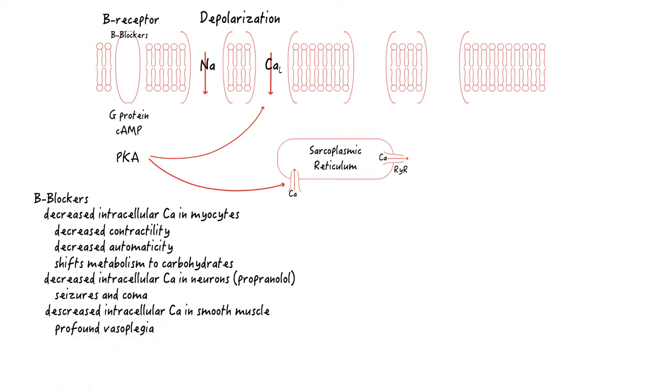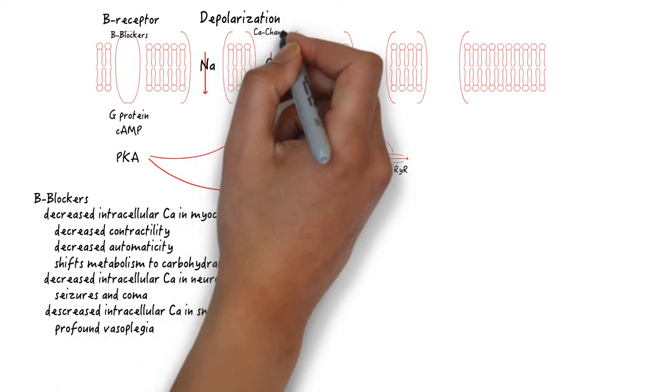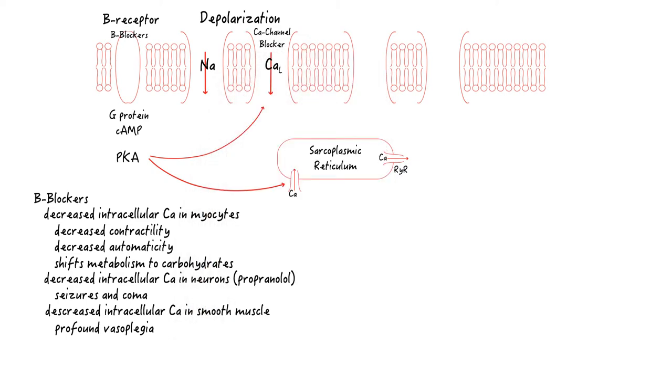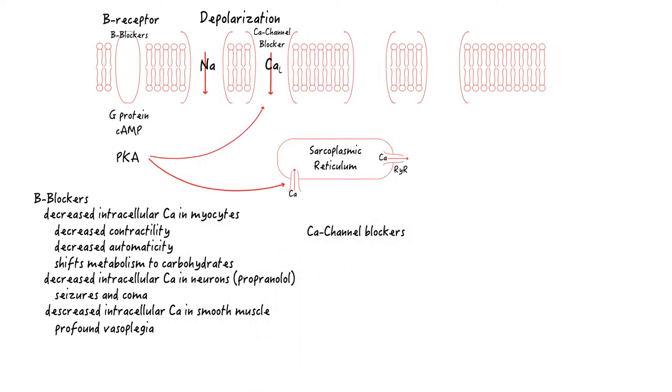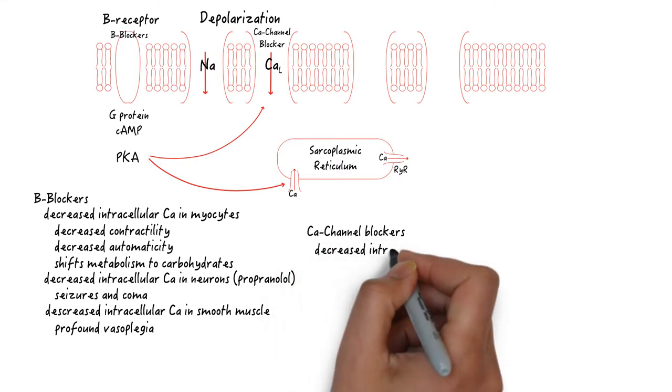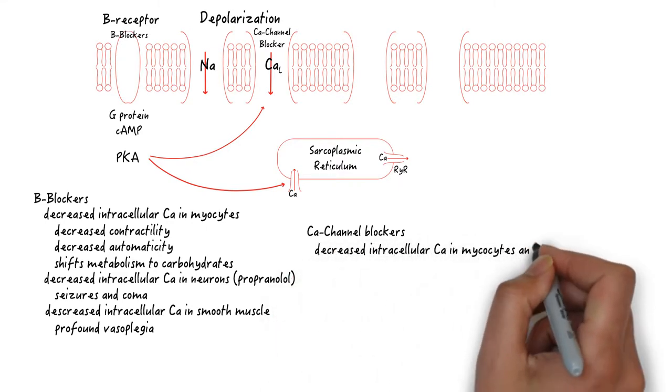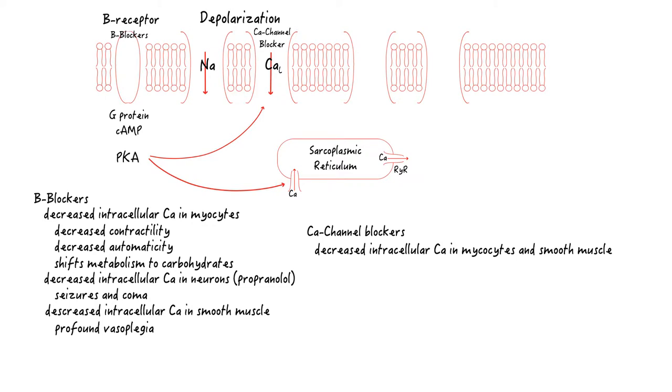Unlike beta blockers, which indirectly inhibits the L-type calcium channels, calcium channel blockers block them directly. This results in a clinical picture very similar to beta blockers. Vasoplegia, decreased contractility, and decreased automaticity. There's also shifting of the fuel source to carbohydrates as well.